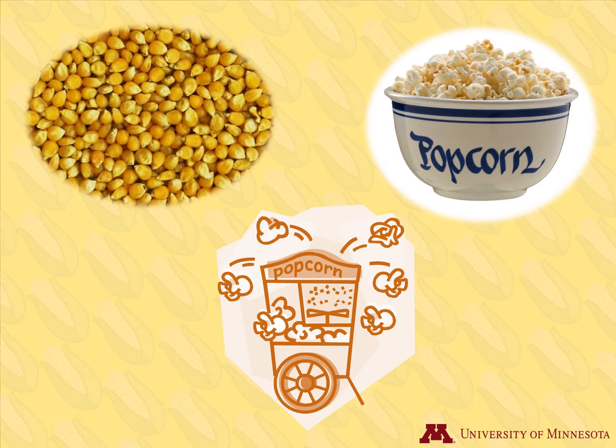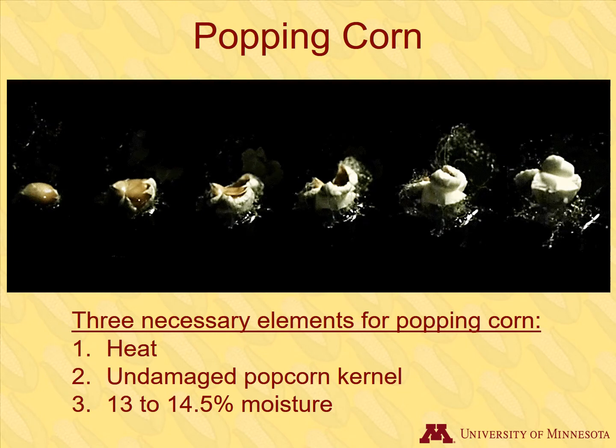So how do popcorn kernels get transformed into this tasty treat? Heat is required. Two things are necessary in addition to heat: an intact kernel and the correct grain moisture, ideally at 13.5% moisture. When popcorn kernels are heated, moisture inside the kernel turns to steam. The hard starch and seed coat keep moisture inside the kernel until the pressure intensifies. Eventually the kernel explodes, breaking open the kernel, while the soft starch in the kernel center expands to help produce the flake, which is the white part of the popped corn. Other types of corn besides popcorn may have the ability to pop, but not as well as popcorn, and they won't have the same volume.